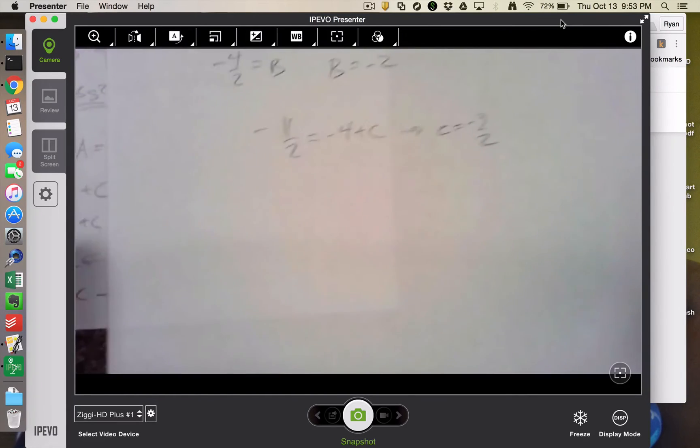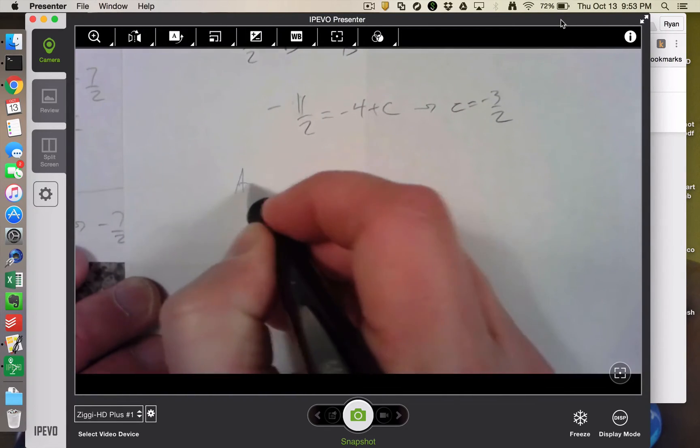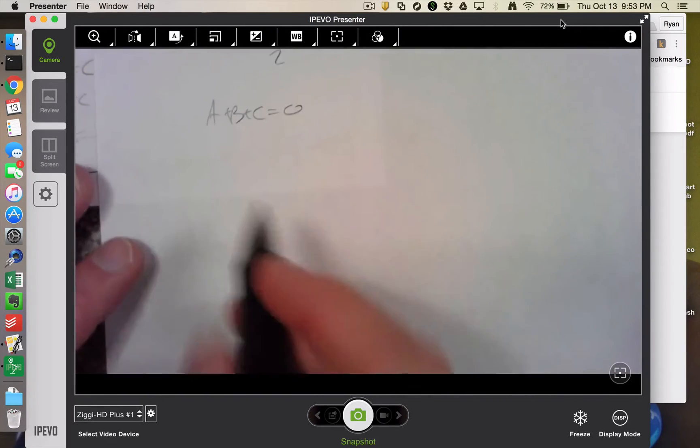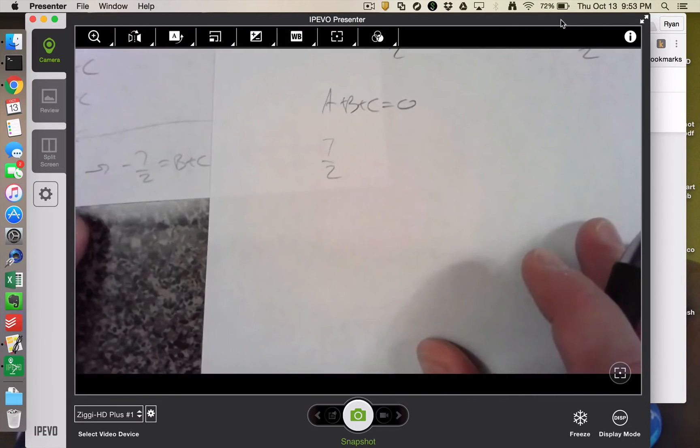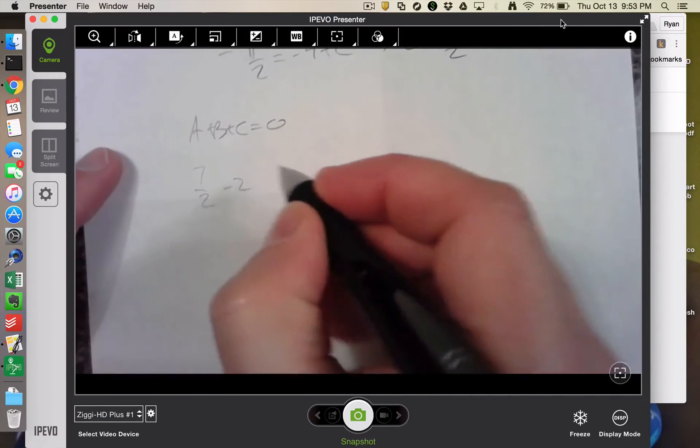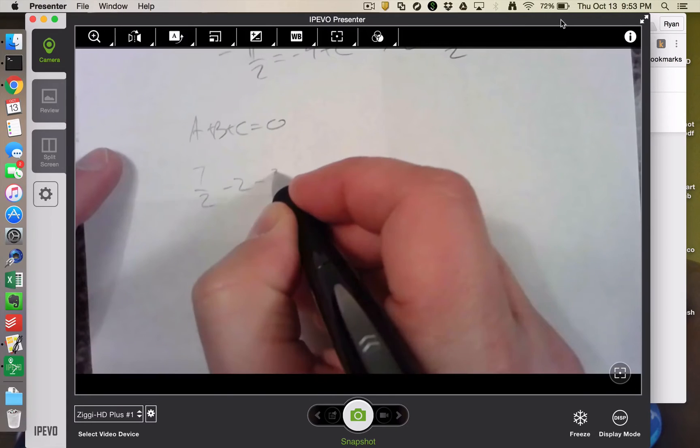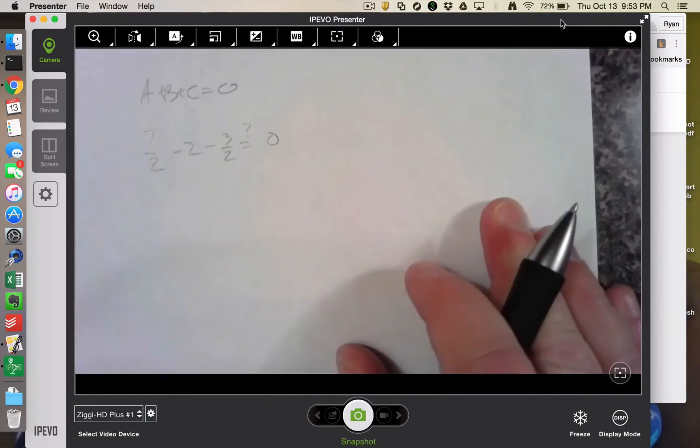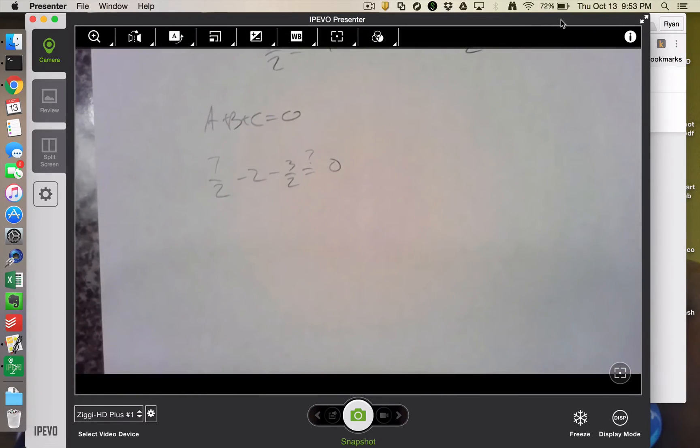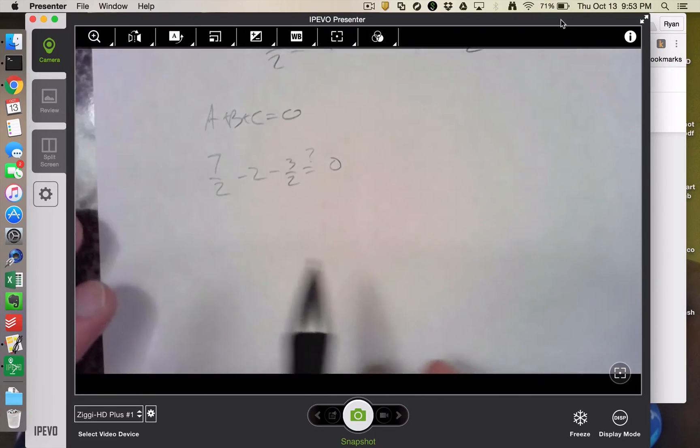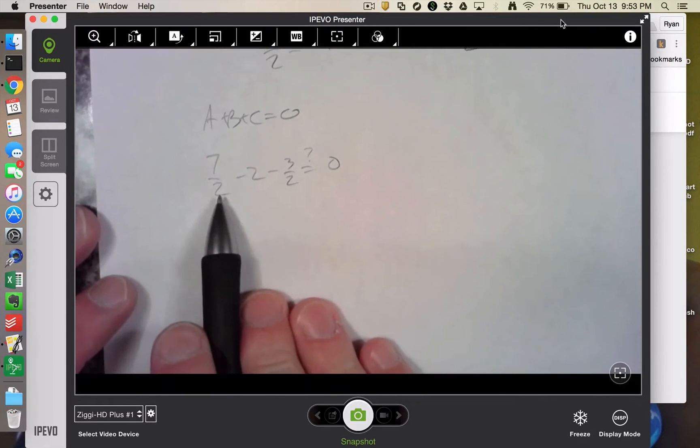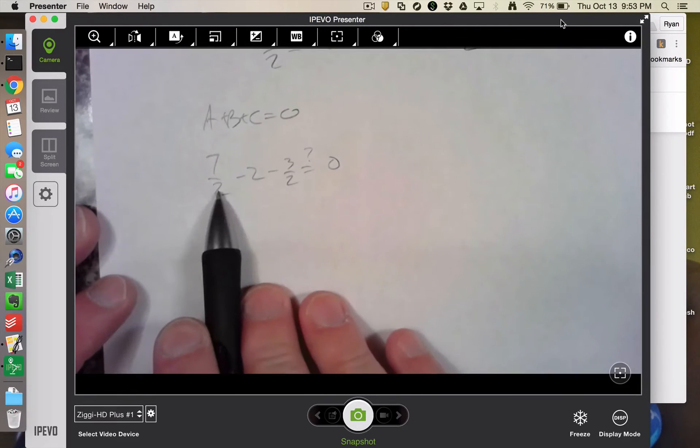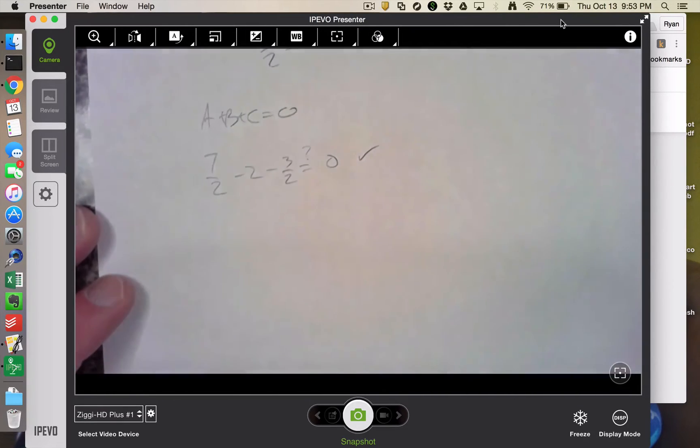And so one verification of that, we said that a plus b plus c was equal to 0. And we've got a is 7 halves, b is negative 2, and c is negative 3 halves. Did I, in fact, get that right? That's not looking super great. No, maybe it is. So this is negative 4 halves, negative 3 halves, 7 minus 4 minus 3 does, in fact, work.